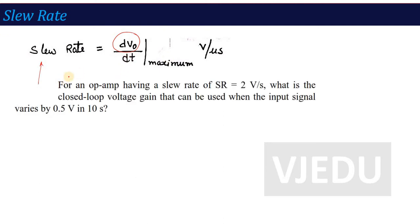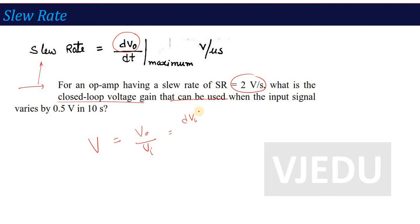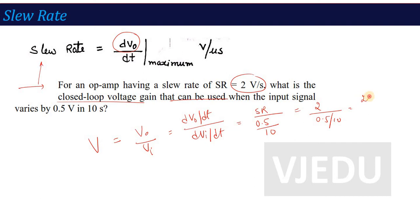Numerical questions on slew rate are common. For example: an op-amp has a slew rate of 2 volts per second. What is the closed-loop voltage gain that can be used when the input signal varies by 0.5 volt in 10 seconds? Voltage gain is V_out by V_in. With changing values, the gain equals the change in output voltage divided by the change in input voltage. Slew rate gives dV_out/dt = 2 V/s. The input rate = 0.5/10. So the gain = 2 ÷ (0.5/10) = 2 × 20 = 40.